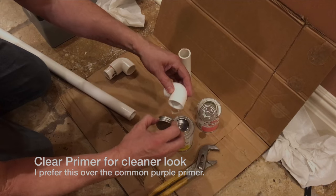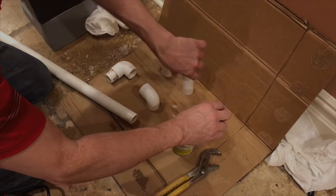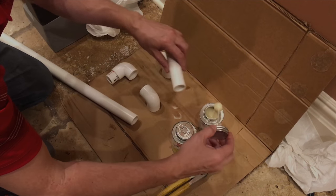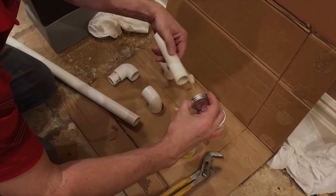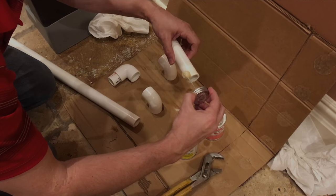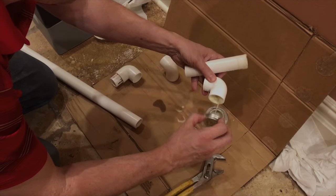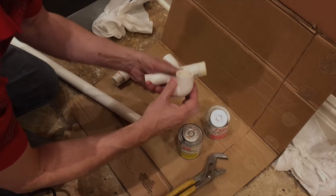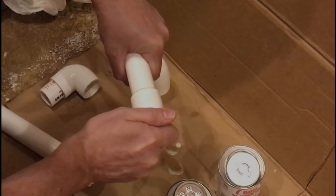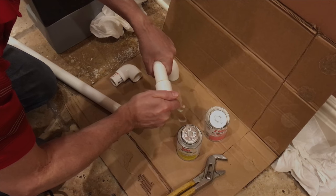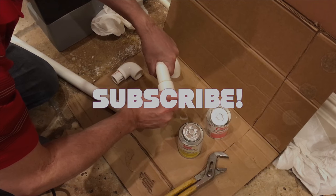I use it on both halves of what I'm going to assemble, and then I use the Oatey's all-purpose cement and I put that on both parts. I press the two parts together and I twist about an eighth of an inch so it kind of smears the glue inside the seam, and then I hold it for about 20 seconds.